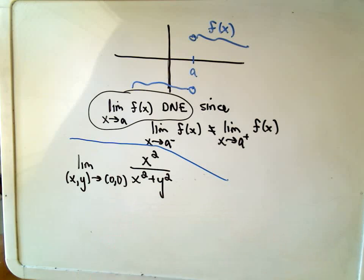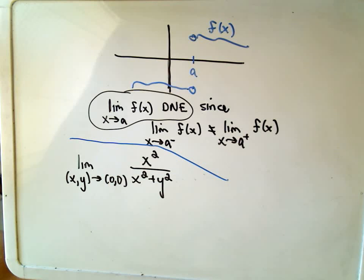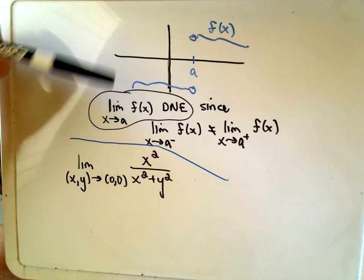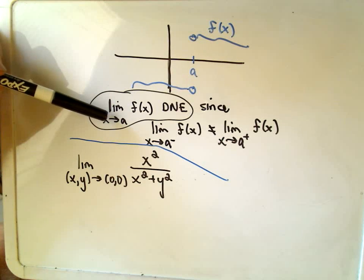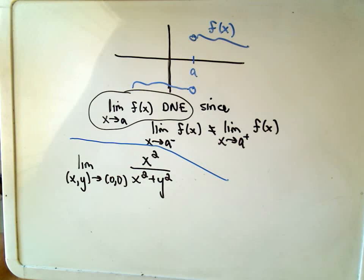L'Hopital's rule is not really applicable because that's kind of used for functions of one variable. Because now, what's going to happen with the derivatives? Are you going to do partial derivatives? What do you do there? So that's one of the issues. To revisit this idea about the left-hand limit not being equal to the right-hand limit, that's going to change a little bit in three dimensions.